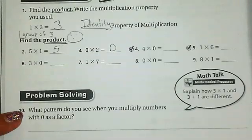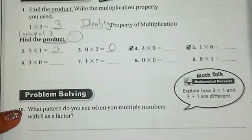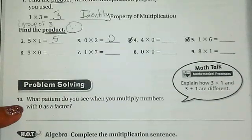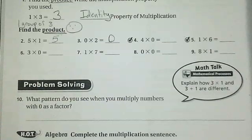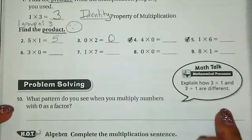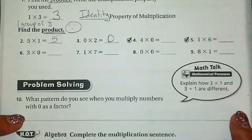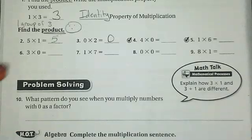Number ten: what pattern do you see when you multiply numbers with zero as a factor? This is a good sentence to answer — there is indeed a pattern. I can't wait to see what you write.